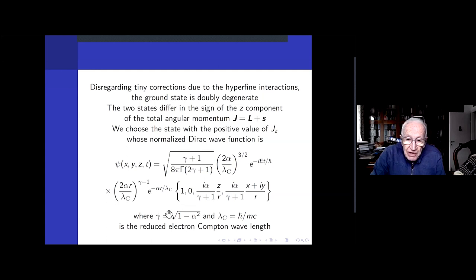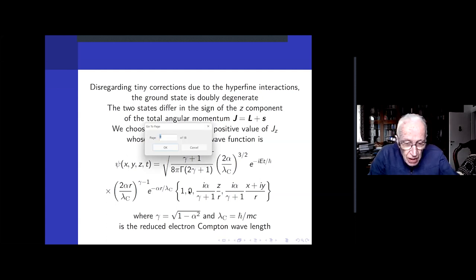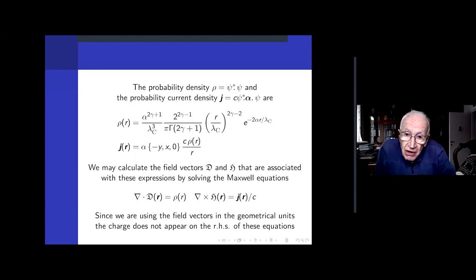I will use this wave function, this spinor, to construct interesting objects: the charge density ρ and the probability current density j. Here are the formulas—as you see, they're much simpler than the original wave function. Many things were shortened in this formula. Now since we have the charge density and current density, and the thing is stationary, I go back to Maxwell equations.